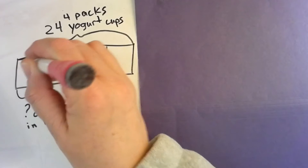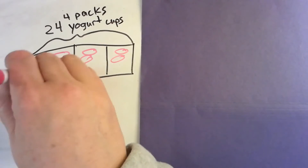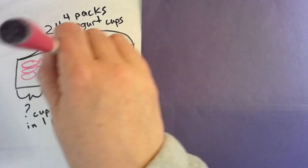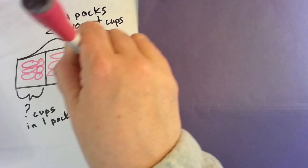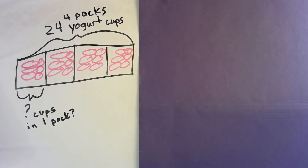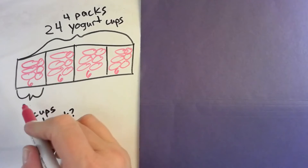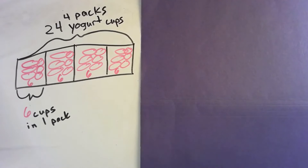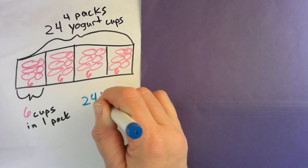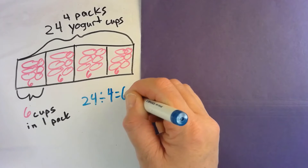What we could do is try the fair share method. So we count out all 24 cups — one through twenty-four — and we end up with six in each pack. So our division equation is: 24 divided by 4 packs equals 6 cups in each pack.